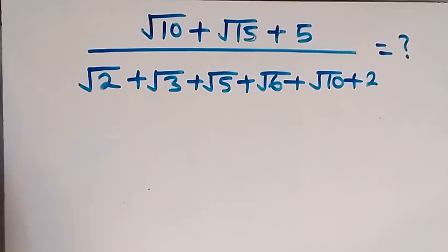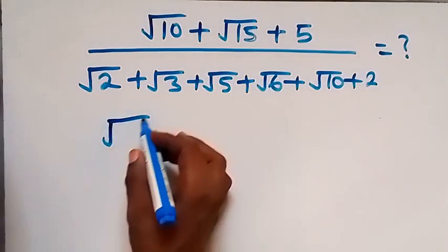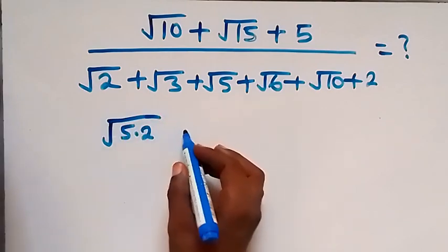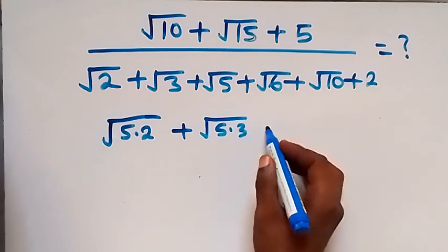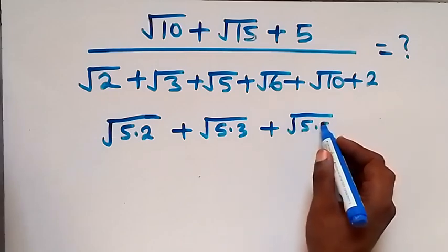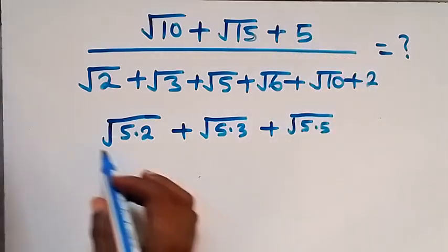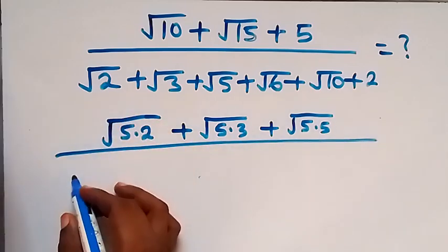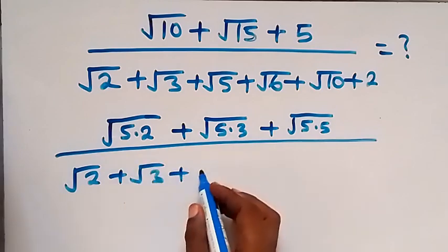Hello, you're welcome here. Let's solve this nice math problem involving roots. From here we can write this as root 5 times 2, which is the same as root 10, then plus root 5 times 3, then plus root 5 times 5 which is the same as root 25, which is the same as 5, then divided by what we have here: root 2 plus root 3 plus root 5.